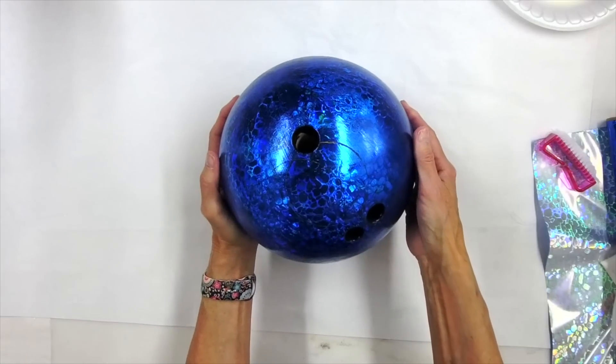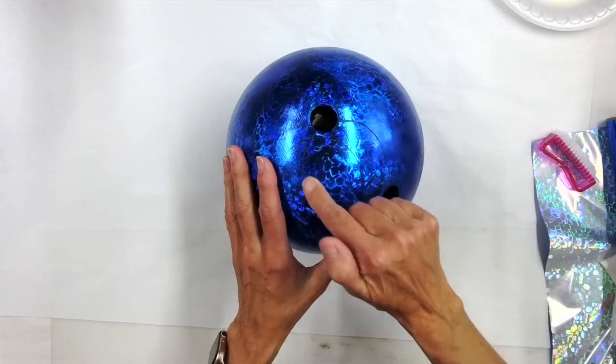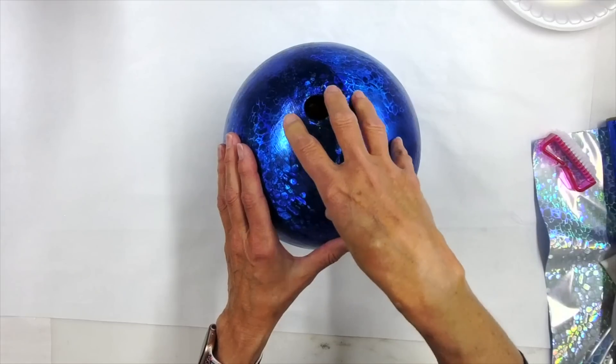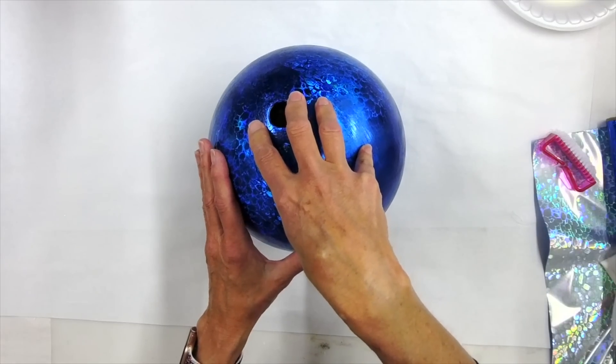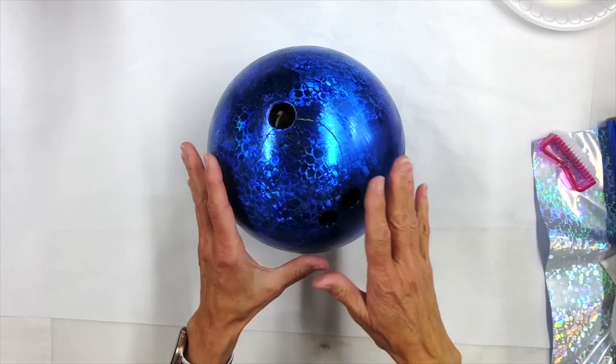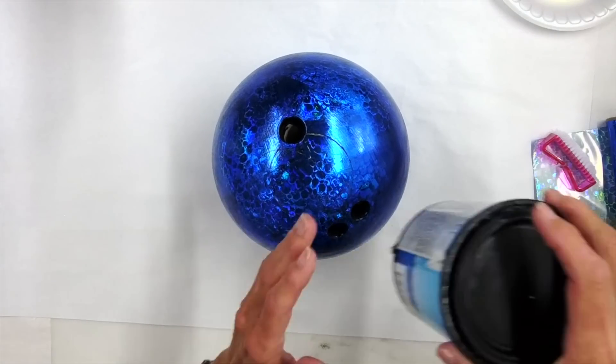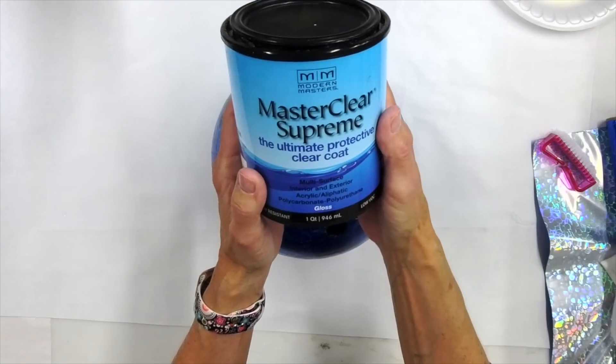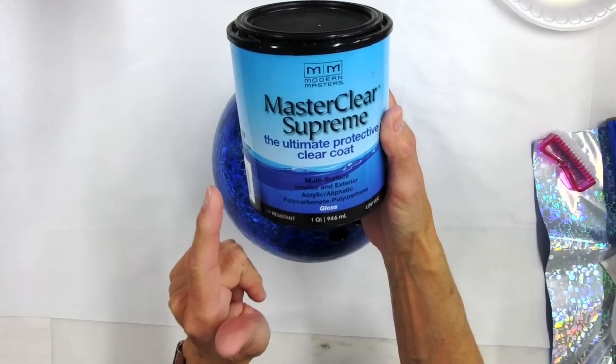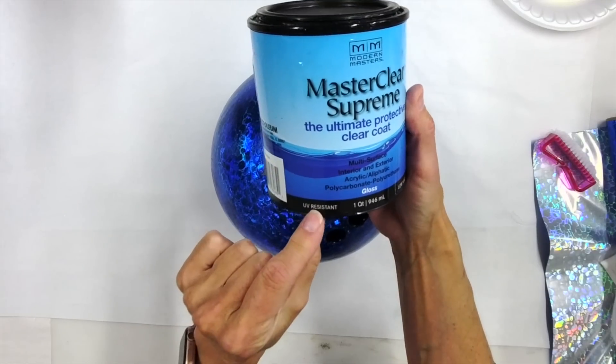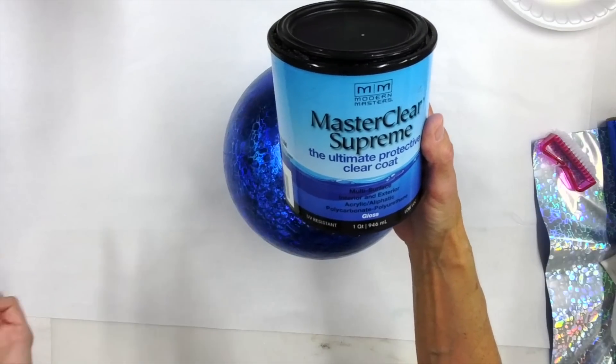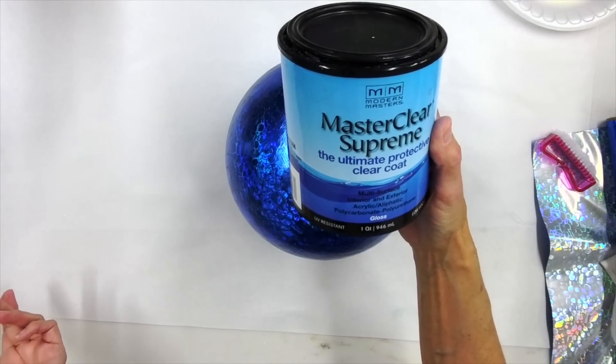We want to seal this. And I did end up with a few little imperfections for where it was sitting on the roll of tape, but that is going to go directly down onto our gazing ball holder. So I'm not worried about that. But we do want to protect this. So I do recommend that you grab a clear coat that is exterior rated with some UV resistance because that is going to help it to withstand the elements of putting it outdoors.